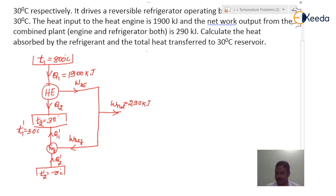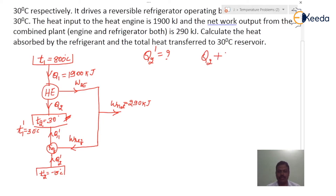If we find out Q2_dash, the first part of the problem is resolved. We should also find the total heat transferred to the 30 degree Celsius reservoir. To that reservoir, Q2 is transferred from the heat engine and Q1_dash is transferred from the refrigerator. So total heat transferred to 30 degree Celsius is Q2 plus Q1_dash. All values — W_HE, Q2, W_refrigerator, Q1_dash, Q2_dash — have to be calculated.